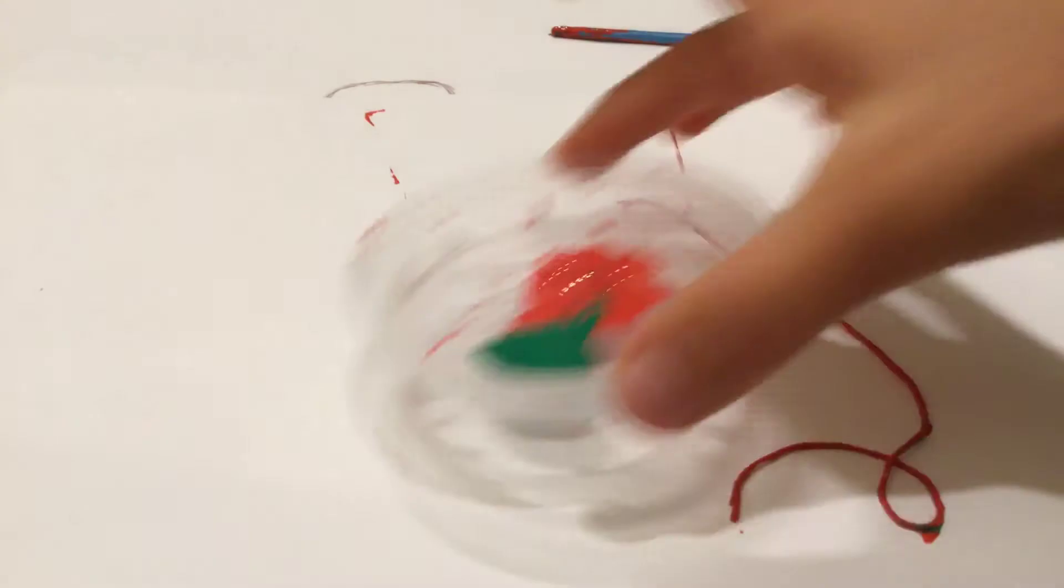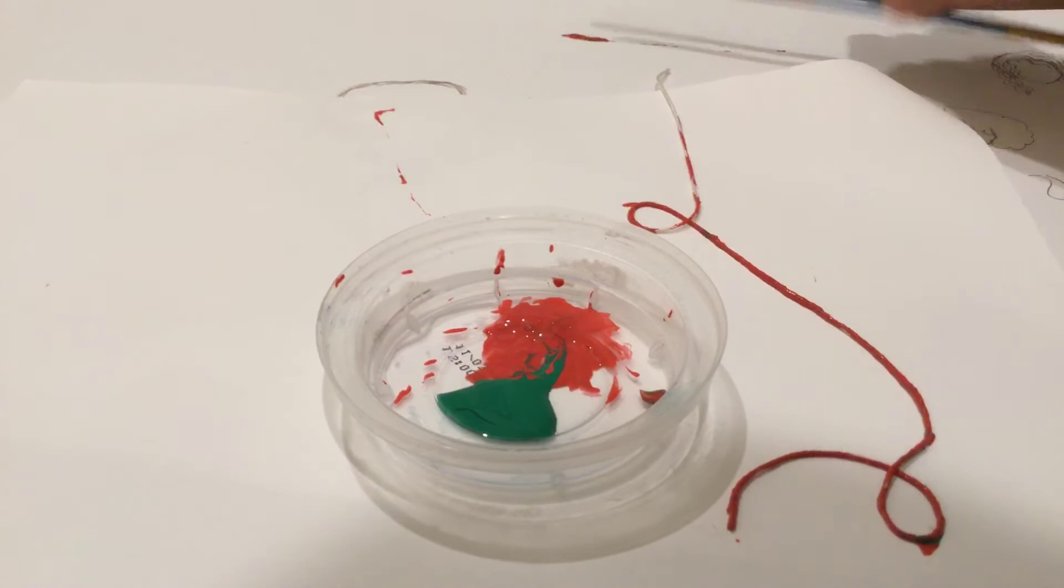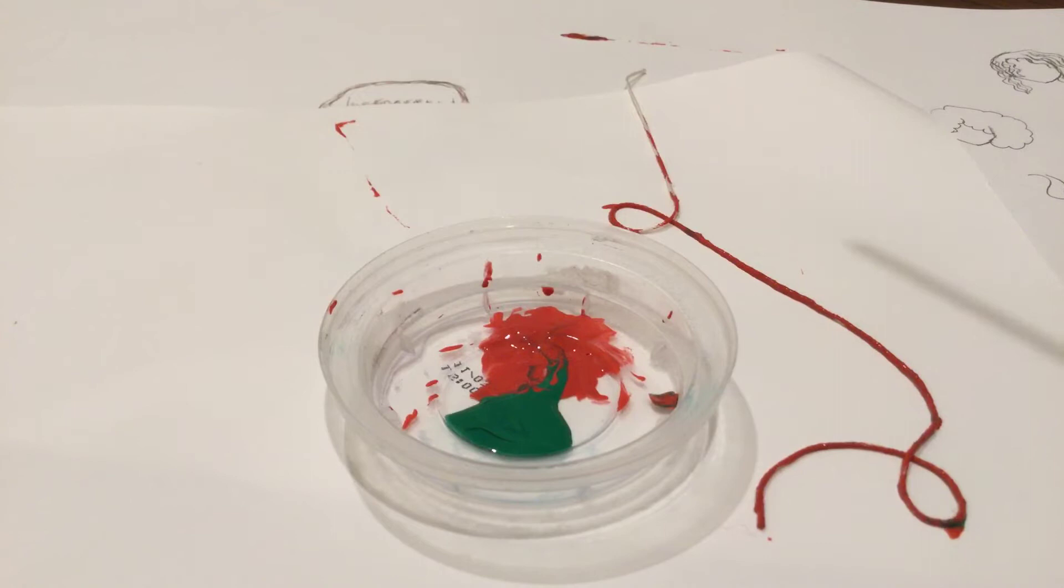And then for the next string you're going to do the same thing. I'm going to clean this paint brush afterwards, so don't worry, this paint brush is not going to be dirty forever. I'm going to clean it right after this video. Then you're going to put this string into the green.